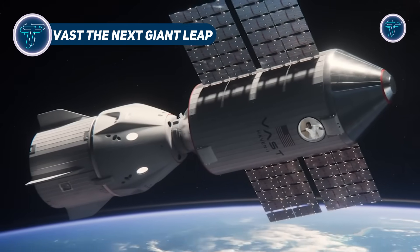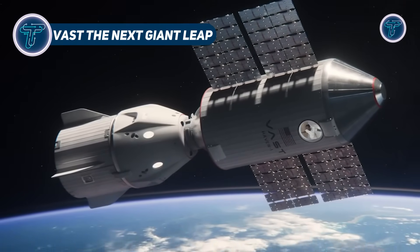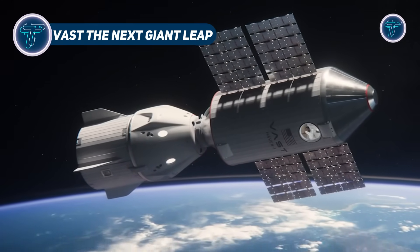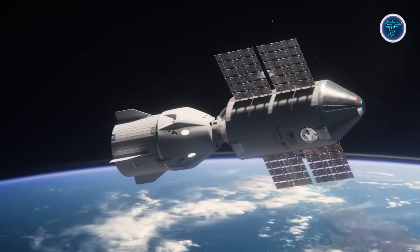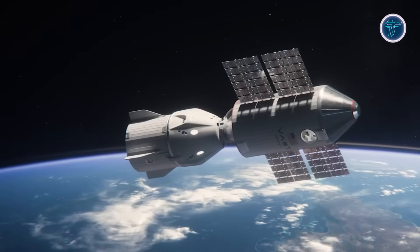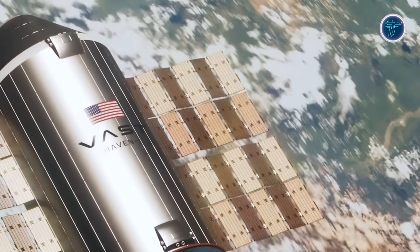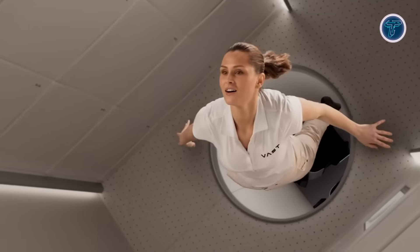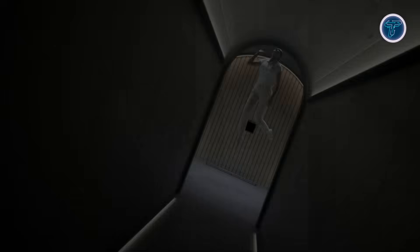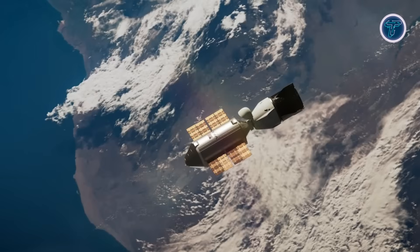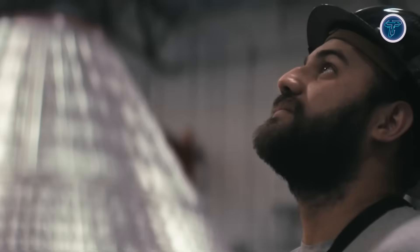VAST the next giant leap. VAST is leading a revolutionary shift in space exploration with its mission to build the world's first commercial space stations. Its first outpost, Haven 1, is set to launch aboard a SpaceX Falcon 9 rocket by 2026. Designed to support four astronauts for 30-day missions, Haven 1 will offer high-speed Starlink laser internet, a domed Earth-viewing window, and capabilities for scientific research and in-space manufacturing.